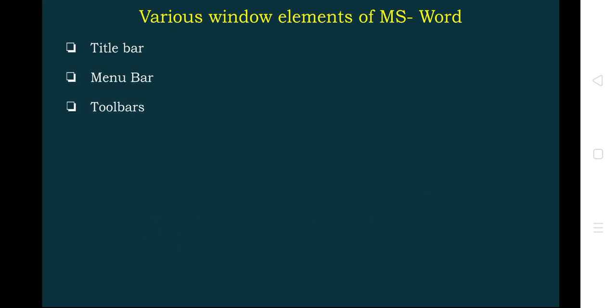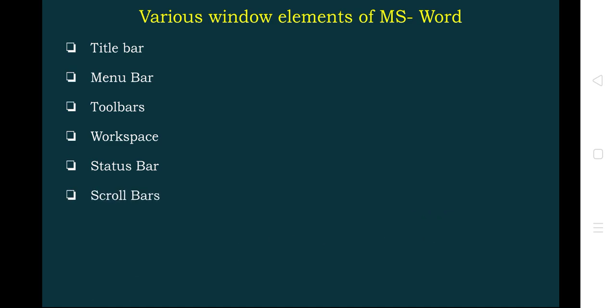We have the toolbars and the workspace where we are typing the information. We have the status bar, then we have the scroll bars and the scroll box where we can move up and down or left and right, and the task pane. Let us see one by one what is the purpose of each and every component.